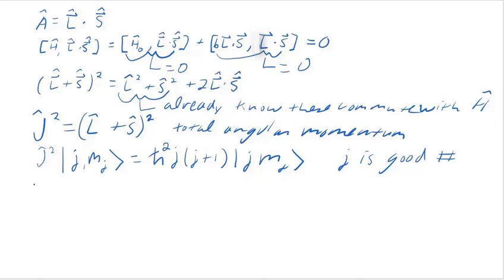Now how about J sub Z? Because we lost two good quantum numbers. And we need to replace both of them. This is one of them. J is going to be a good quantum number. The eigenvalue with J sub Z would be this M sub J. So let's determine if M sub J is a good quantum number.